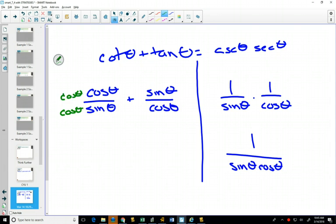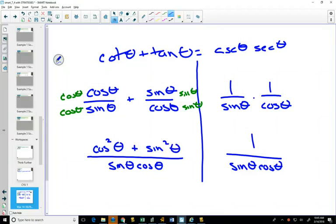And so my common denominator here, well, this one's missing a cos, and this one's missing a sine. And so I would have a common denominator of sine theta times cos theta. And on the top, I will have, adding these, I have cos squared plus sine squared.